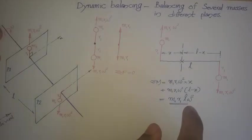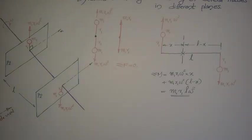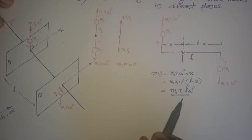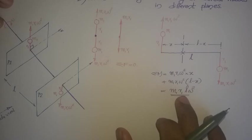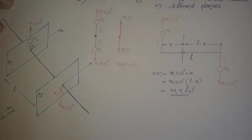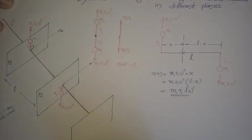Even if you add a balancing mass in another plane to cancel the force, you cannot cancel the unbalanced couple. So we have to balance this unbalanced couple as well. For this, we consider another rotational plane where we add another mass to cancel out this unbalanced couple.